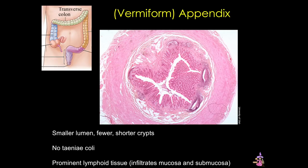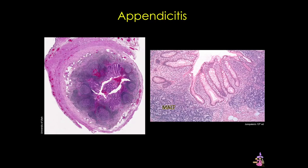Because it's a closed sac, the appendix often traps infectious agents in its lumen, and this leads to inflammation, swelling, and pain — we call this appendicitis. This can occur at any age, but most commonly it occurs in children and teenagers, and it's considered a medical emergency.